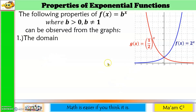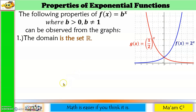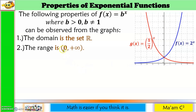Starting with the domain: the blue graph extends infinitely to the left and goes up infinitely, while the red graph also extends infinitely in both directions. So the domain for both is from negative infinity to positive infinity — the set of all real numbers. For the range: no part of either graph falls below the x-axis, so the range is from 0 to positive infinity, but 0 is not included.